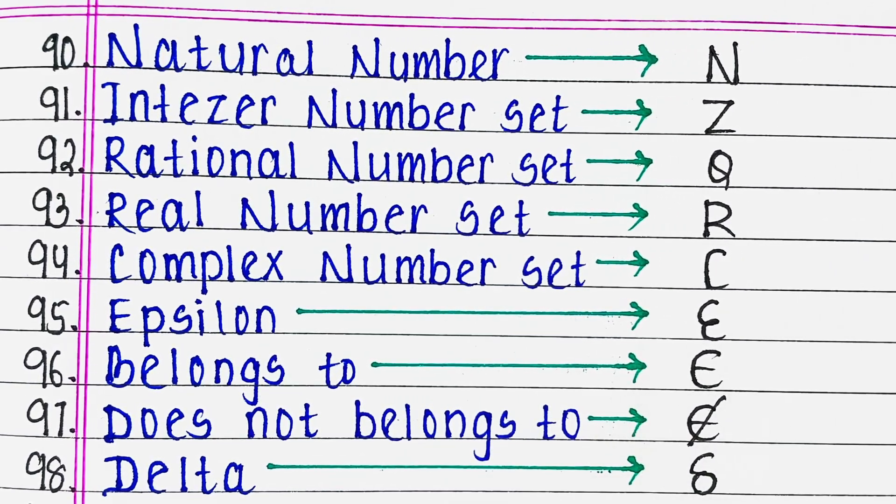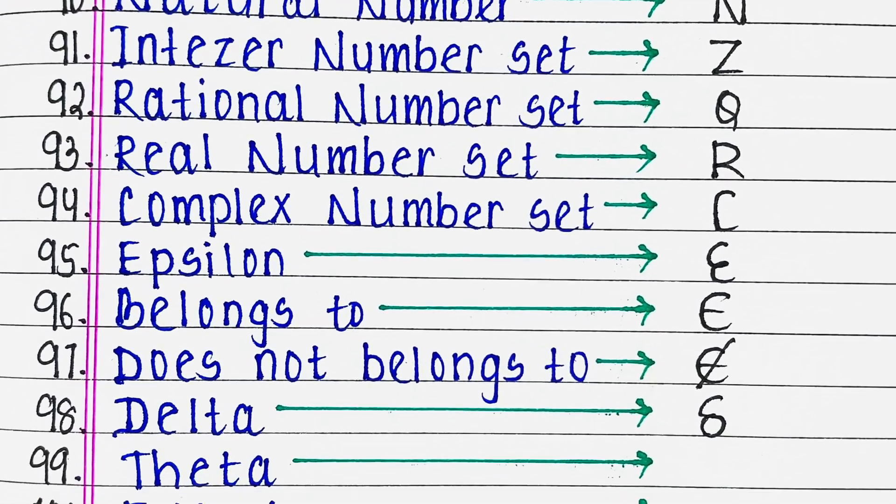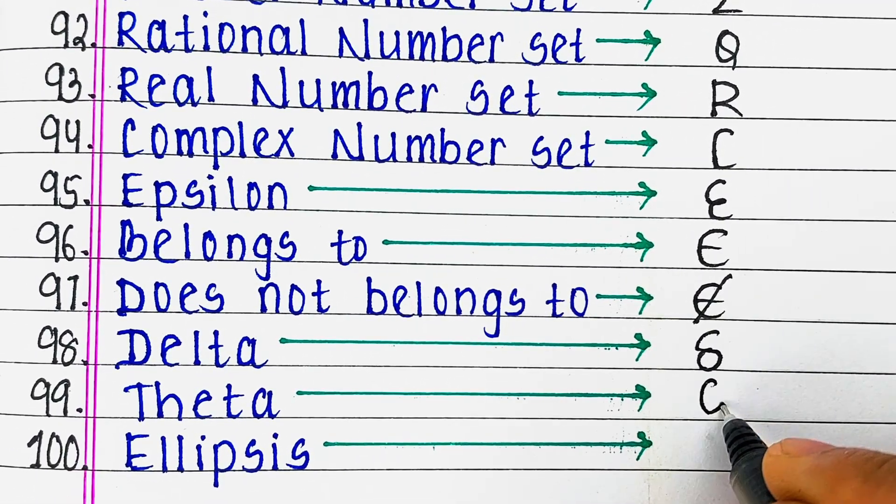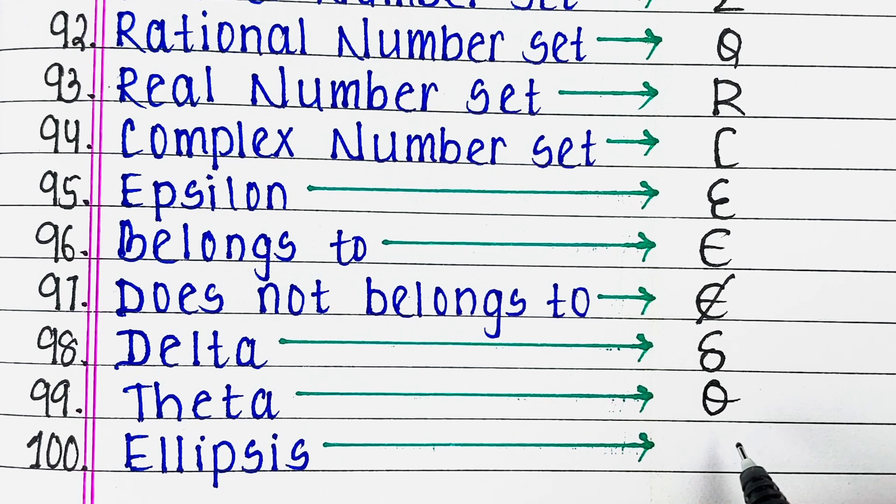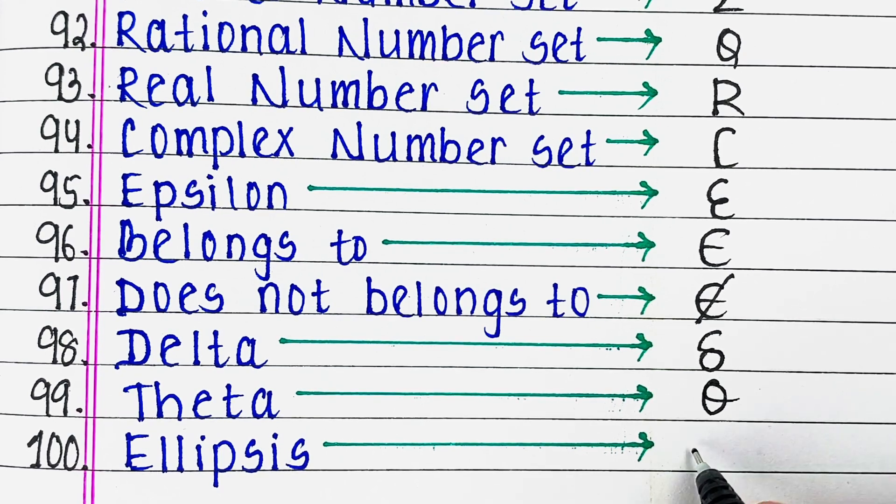On number 98 we have delta, next is theta. On number 100 we have ellipses.